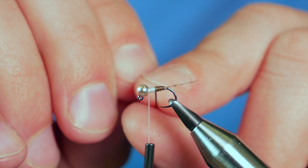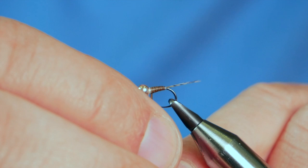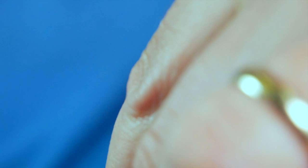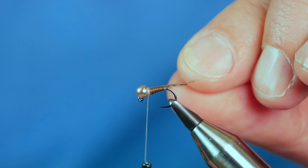But to be perfectly honest at this size, I don't think it's going to make a great deal of difference. So I've got that in place, and I'm just bringing a thread wrap over to hold that in. Then I'll get three or four turns on and then come in front of my stripped quill. And then I can just come in with my snips and remove that.